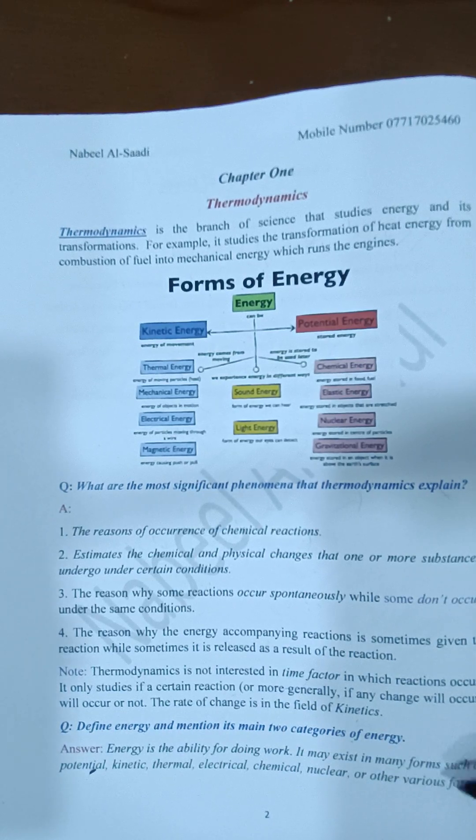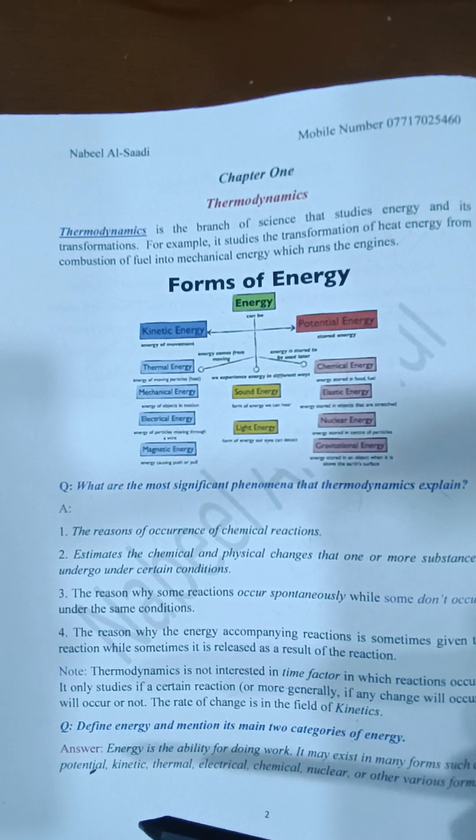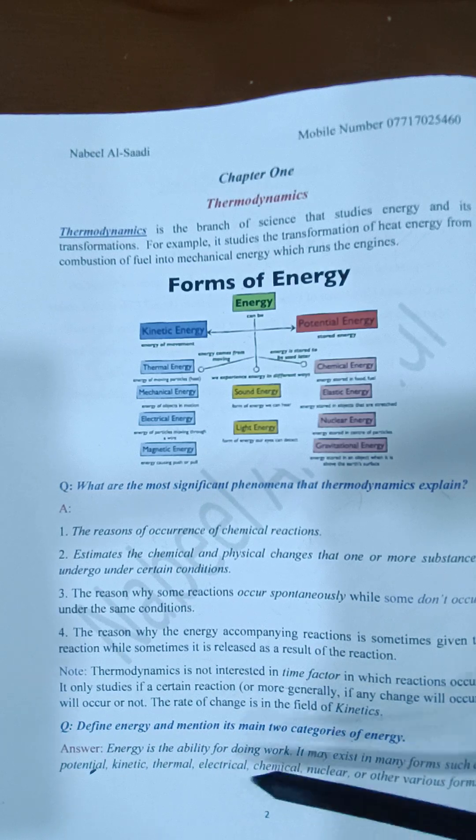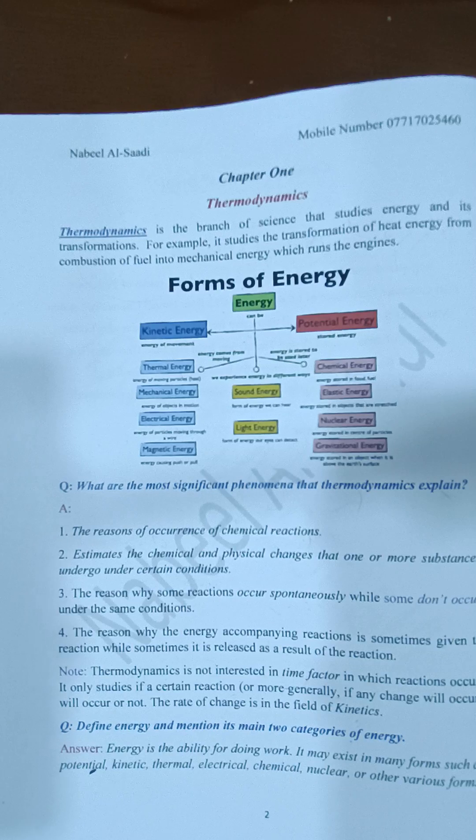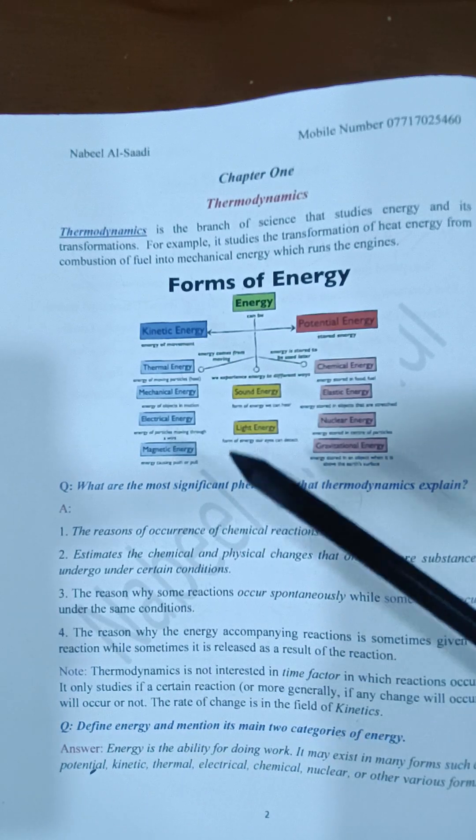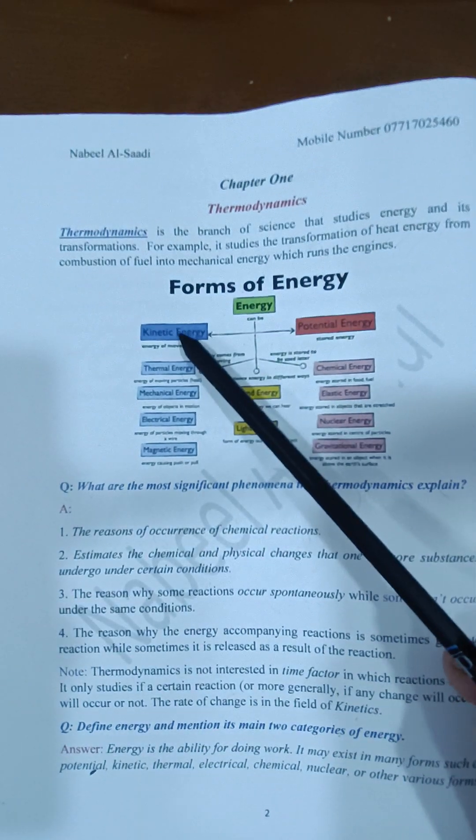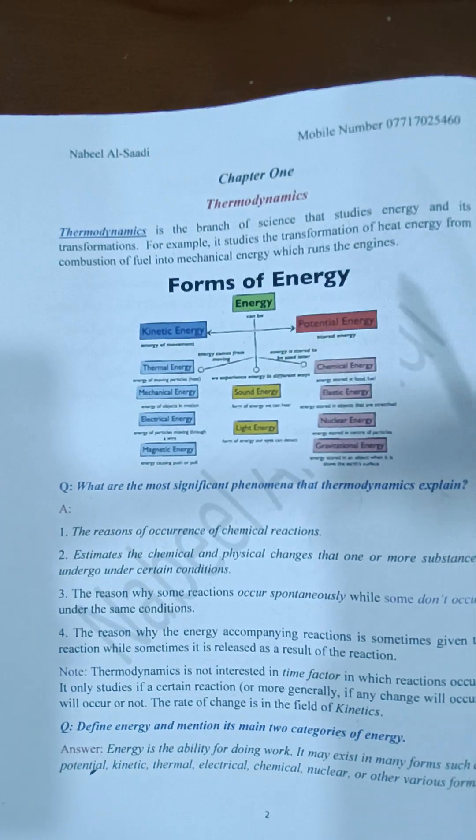It may exist in many forms, such as potential energy, kinetic energy, thermal energy, electrical, chemical, nuclear, or other various forms. But the two main forms, they are kinetic and potential energy.